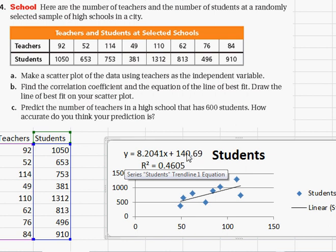It says here predict the number of teachers in a high school that has 600 students and how accurate do you think that prediction is. So I'm looking at this equation right here.